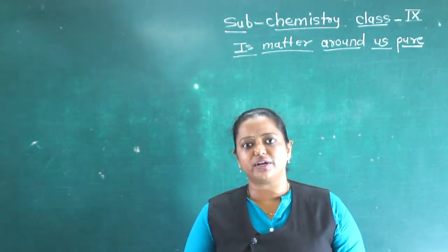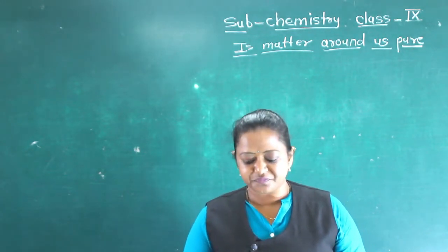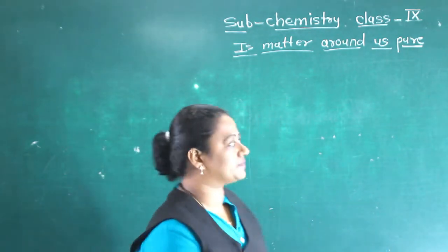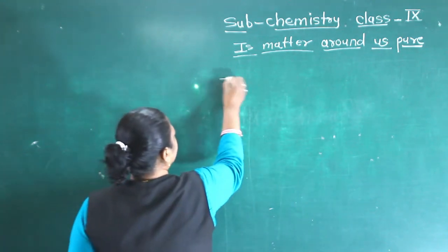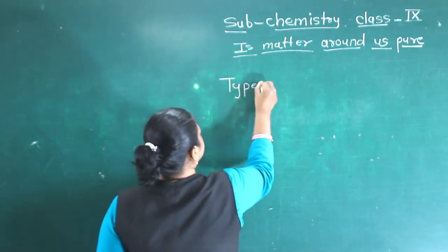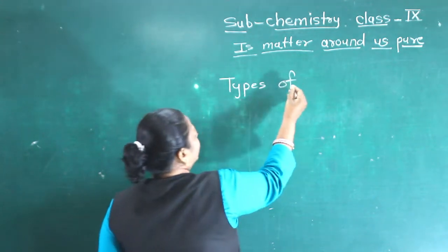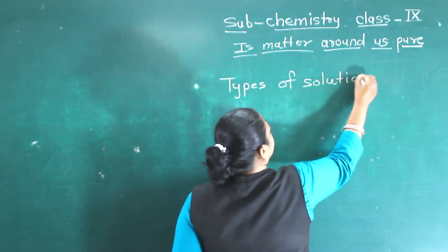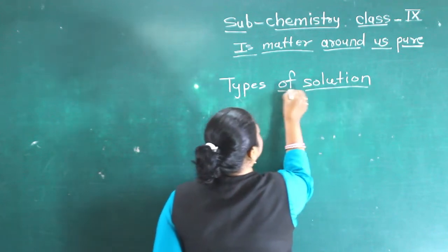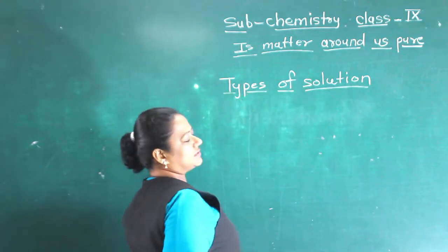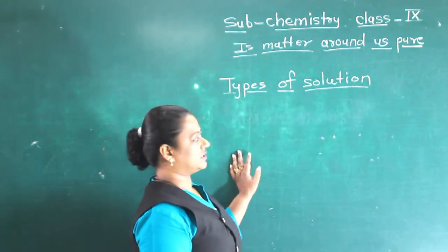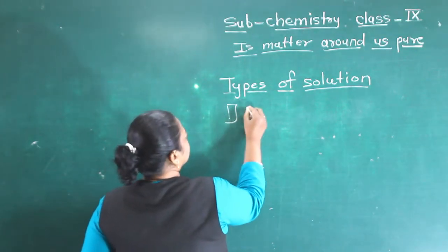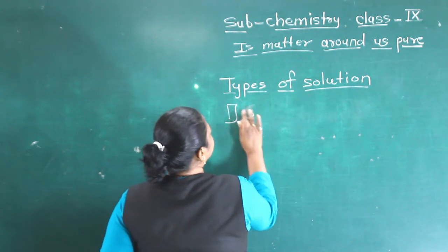Please watch very carefully so that you can understand better. We will start with the types of solution. There are three types of solution. Here I will give you one example, and through that example you can understand the types of solution. The first type of solution is unsaturated solution.